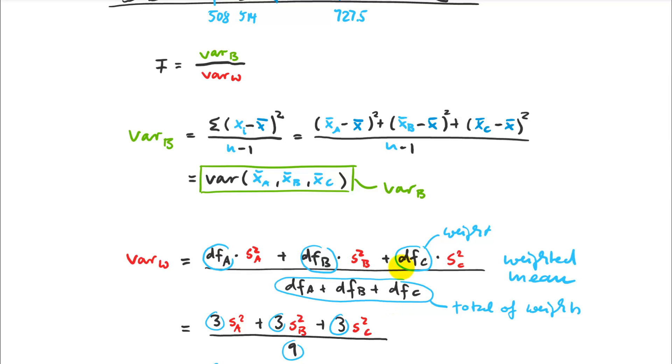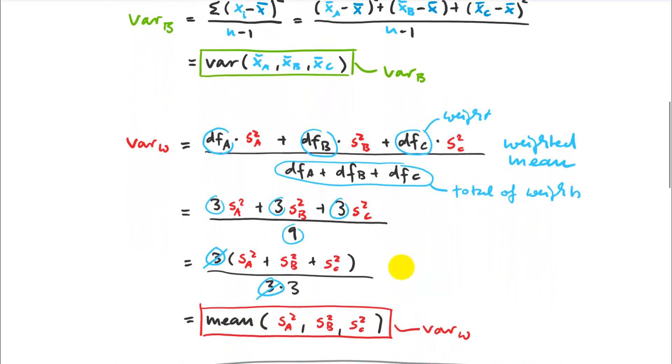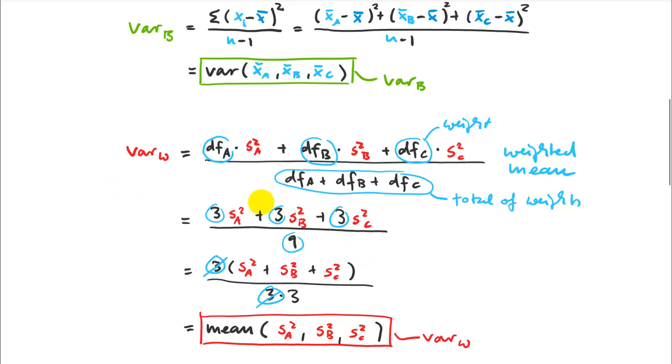If we do this for our particular situation, the math actually simplifies even more because we have an equal sample size. It would be n minus one, four minus one is three times each of the variances. Then I can factor out the three, that cancels out. So it's actually just my three variances divided by three, a mean of the variances. The weighted mean in this case just simplifies to a straight mean. That's nice.